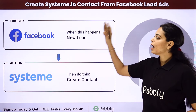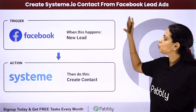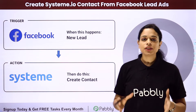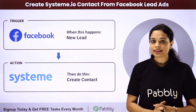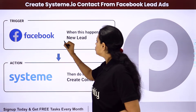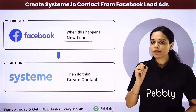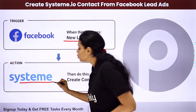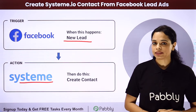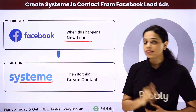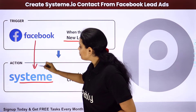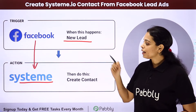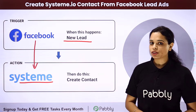In this video, we are going to understand how you can create a Systeme.io contact from Facebook lead ads. So let's say that you are promoting your business using Facebook lead ads, and every time a new lead is captured, that lead should automatically be created as a new contact in Systeme.io, which is an all-in-one marketing platform. To do this, we will integrate these two applications using Pabbly Connect, where the trigger will be Facebook lead ads and the action application will be Systeme.io.